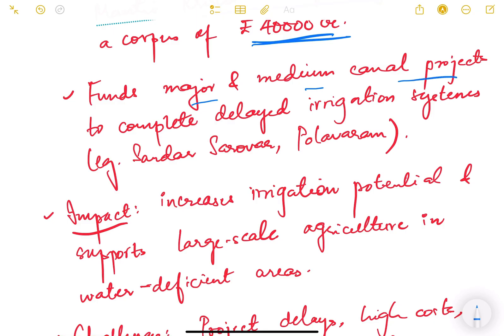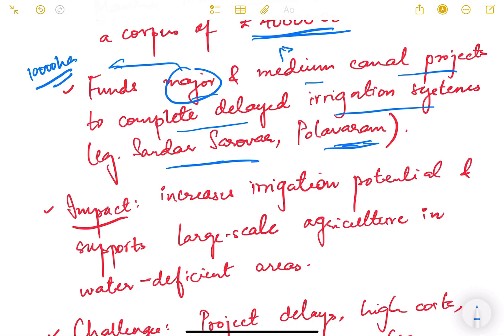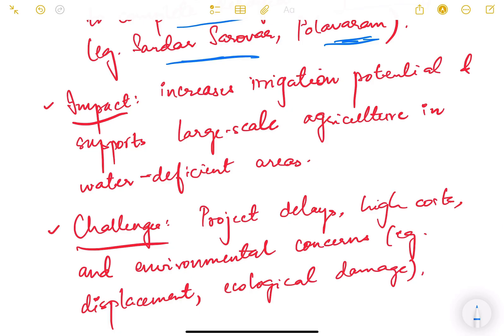It funds major and medium canal projects to complete delayed irrigation systems—examples are Sardar Sarovar, Polavaram projects, etc. A major irrigation project is a project which irrigates more than 10,000 hectares of land. A medium irrigation project irrigates less than 10,000 hectares of land.